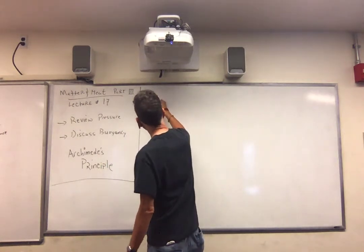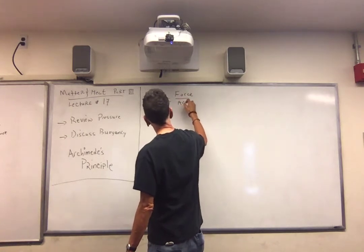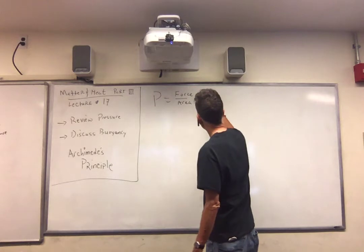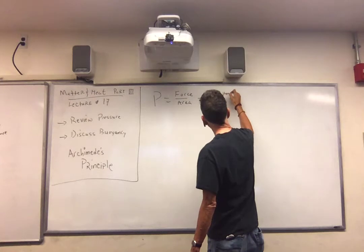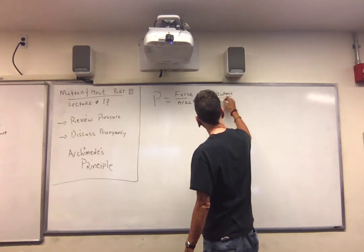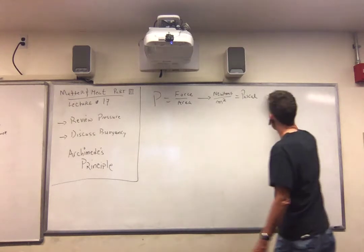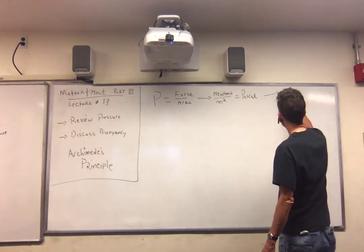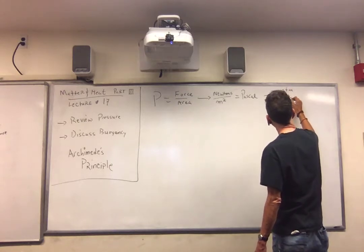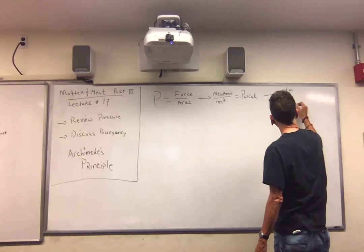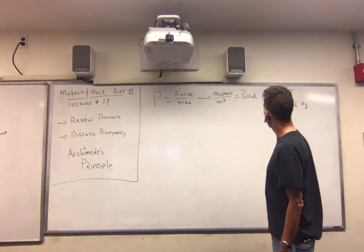Pressure was force over area. The units for force over area were newtons per meter squared, and we said that was called a Pascal. Other units of pressure: we had atmospheres, we had pounds per square inch, we had mm of Hg — millimeters of mercury.